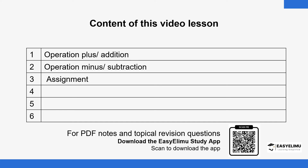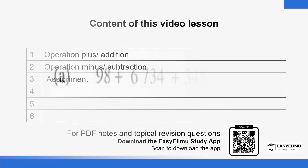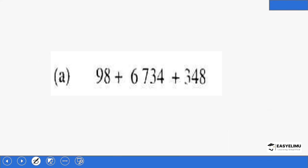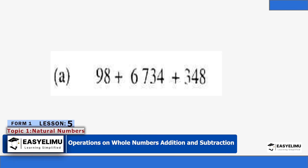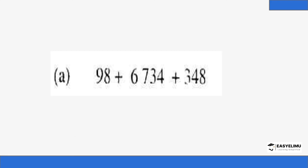Our first example: we have the number 98, you add 6734, and then you add 348. I want to see how you add numbers — how do you do this operation?